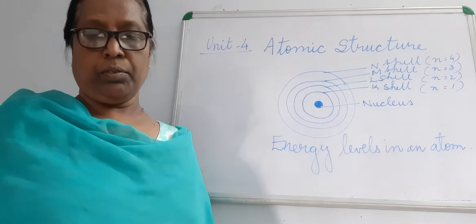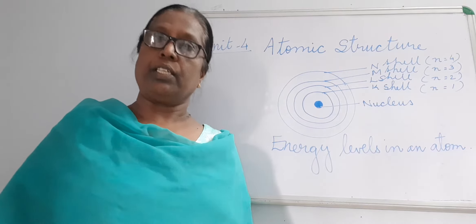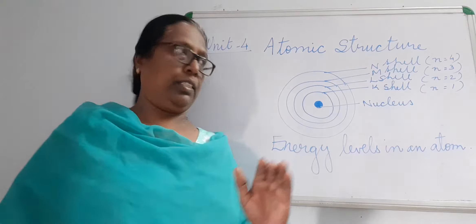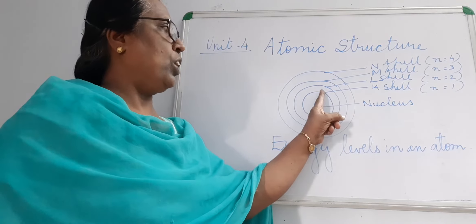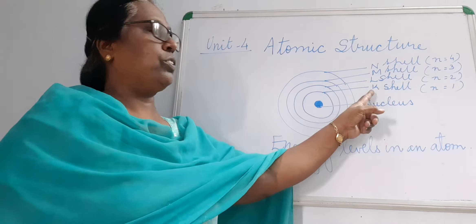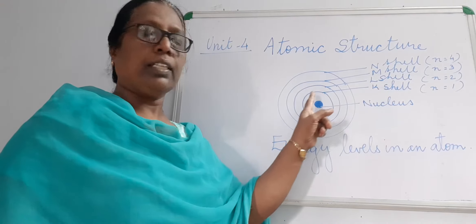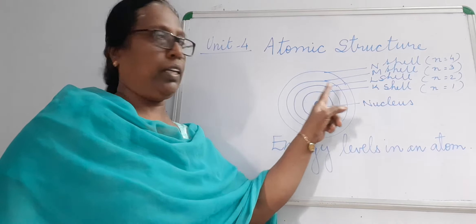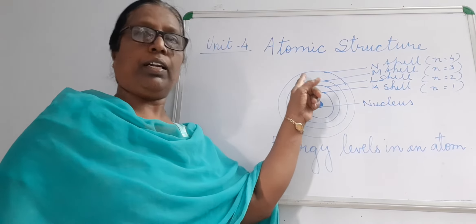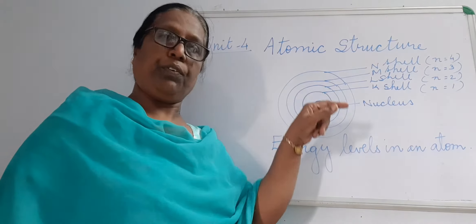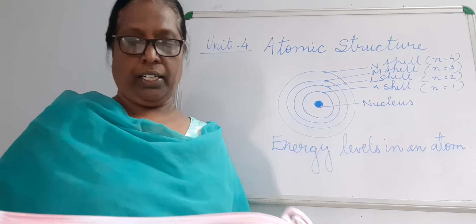Different orbits possess different energies. This is the first orbit, known as the K shell, and it has its own energy. The second orbit will have a different amount of energy.